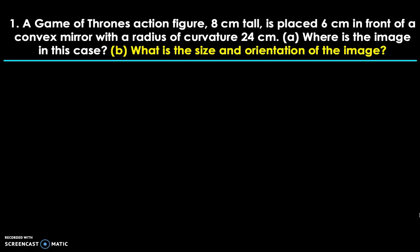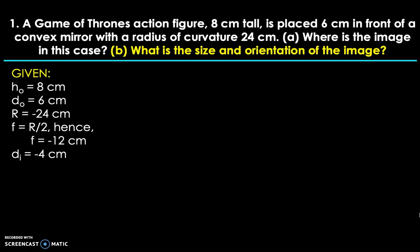Going forward, let us solve for the next required to find, which is the size and orientation of the image. Same given, and we just added d_i, which is negative 4. Because as mentioned earlier, normally in optics problems, something that you have just solved previously is normally utilized in the second required to find. The required to find this time is the size and orientation of the image. So the size is equivalent to the variable that we call image height, or h_i.